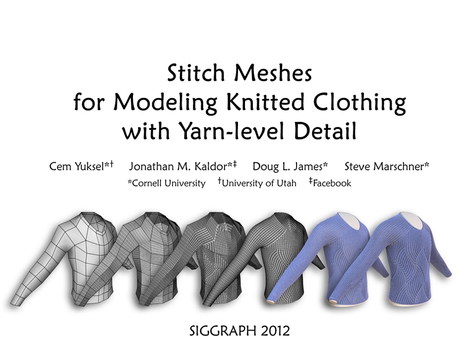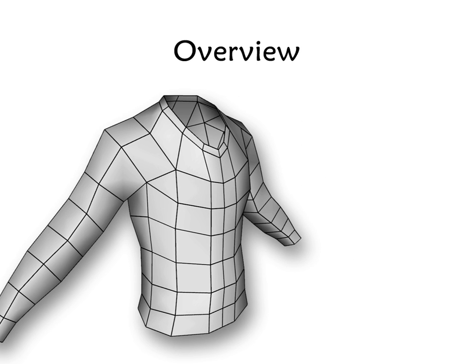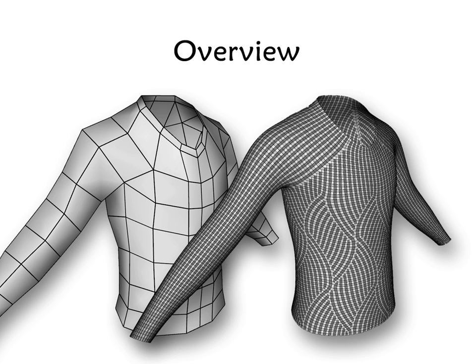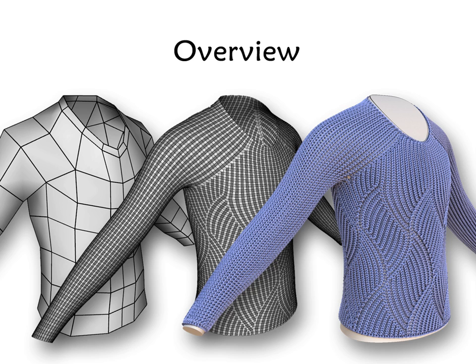In this paper, we propose a system for modeling full-size knitted garments with yarn-level detail and complicated knitting patterns. We begin with a polygonal mesh that defines the surface of the garment. Then, we use an interactive modeling procedure to generate a high-resolution mesh used as an abstract representation of the yarn-level model — we call this the stitch mesh. Finally, we generate the actual yarn curves from the stitch mesh and perform physically-based relaxation that produces realistic 3D deformations for the knitted garment.